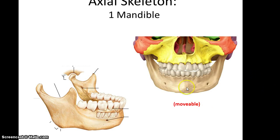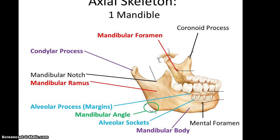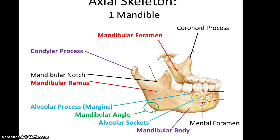The mandible is the one bone in the skull that is naturally movable. It has a number of features: the condylar process, which articulates with the temporal bone — that's where the joint is that allows the jaw to open and close. It has a mandibular notch. The large portion of the mandible is referred to as the mandibular ramus. It has a mandibular angle, leading to the mandibular body, which is the bulk of the mandible. There is also a mental foramen in the mandible. Along the edge where the teeth are is the alveolar process, or alveolar margin, and where the teeth actually insert is referred to as the alveolar sockets.